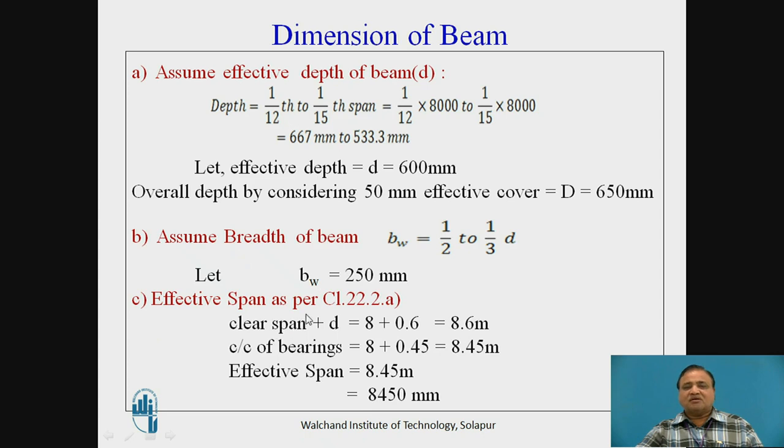Effective span: we are supposed to calculate as per clause number 22.2a since it is simply supported beam. It is given by clear span plus depth or center to center of bearing, whichever is less. Out of these two values, lesser is 8.45, therefore this is the effective span of the beam.